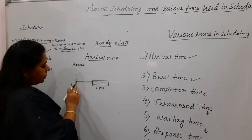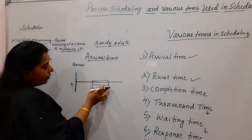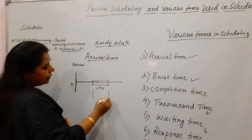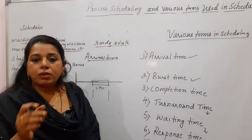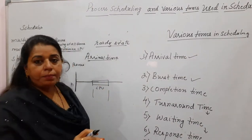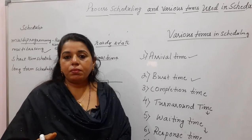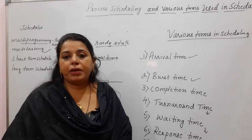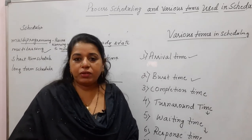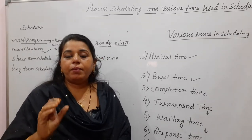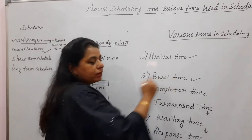Process needs some time for execution. The complete time duration a process takes to complete its job is called the burst time. Suppose process P1 entered but did not get the CPU immediately; afterwards it got the CPU and took some amount of CPU time to complete its task — that is the burst time. The CPU time needed for the process to complete its job is the burst time.